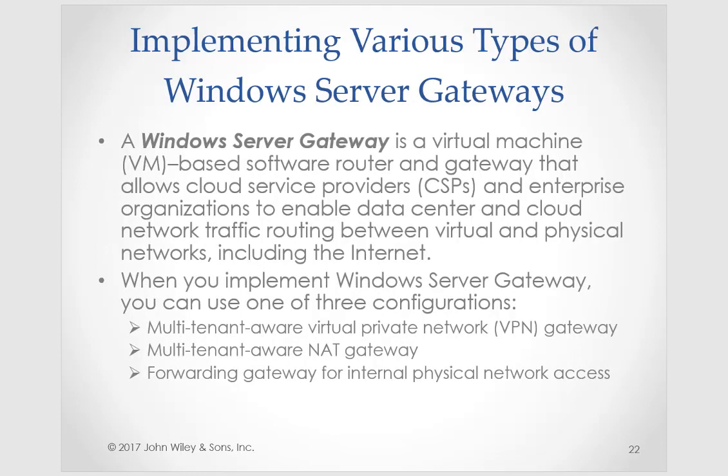The Windows Server gateway is a virtual machine-based software router and gateway that allows cloud service providers and enterprise organizations to enable data center and cloud network traffic routing between virtual and physical networks, including the internet. There are three configurations you can use: a multi-tenant-aware VPN gateway, a multi-tenant-aware NAT gateway, or as a forwarding gateway for internal physical network access.